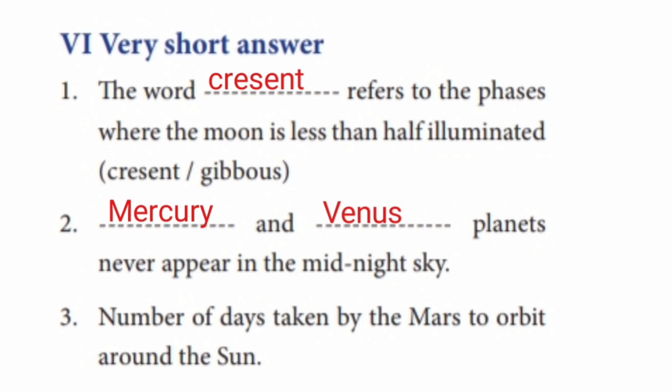Question 3: The number of days taken by Mars to orbit around the Sun is 687 days.